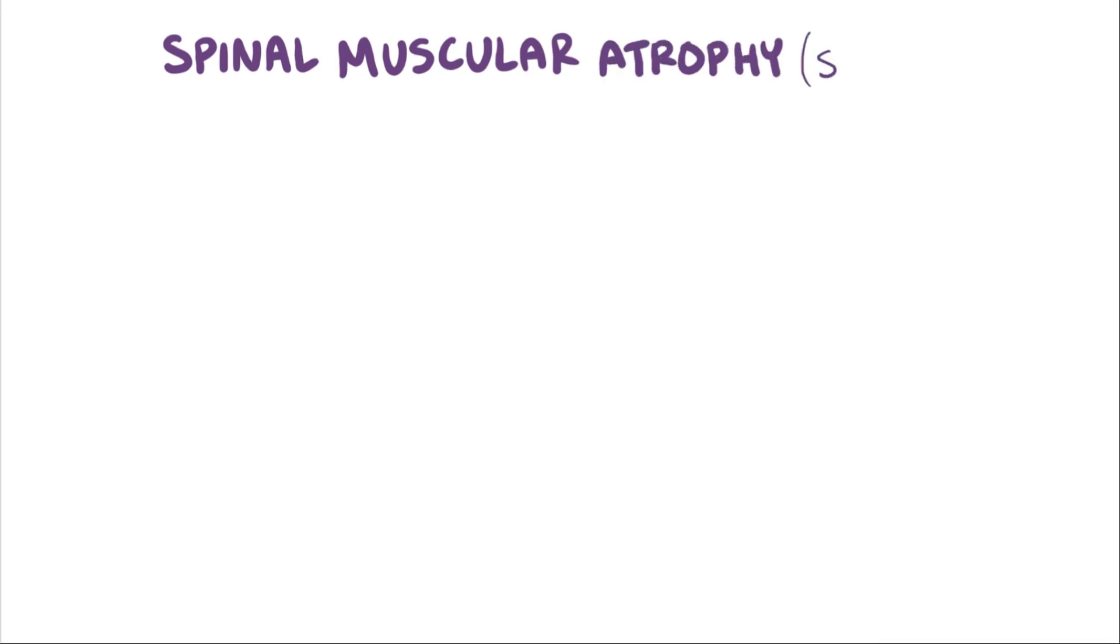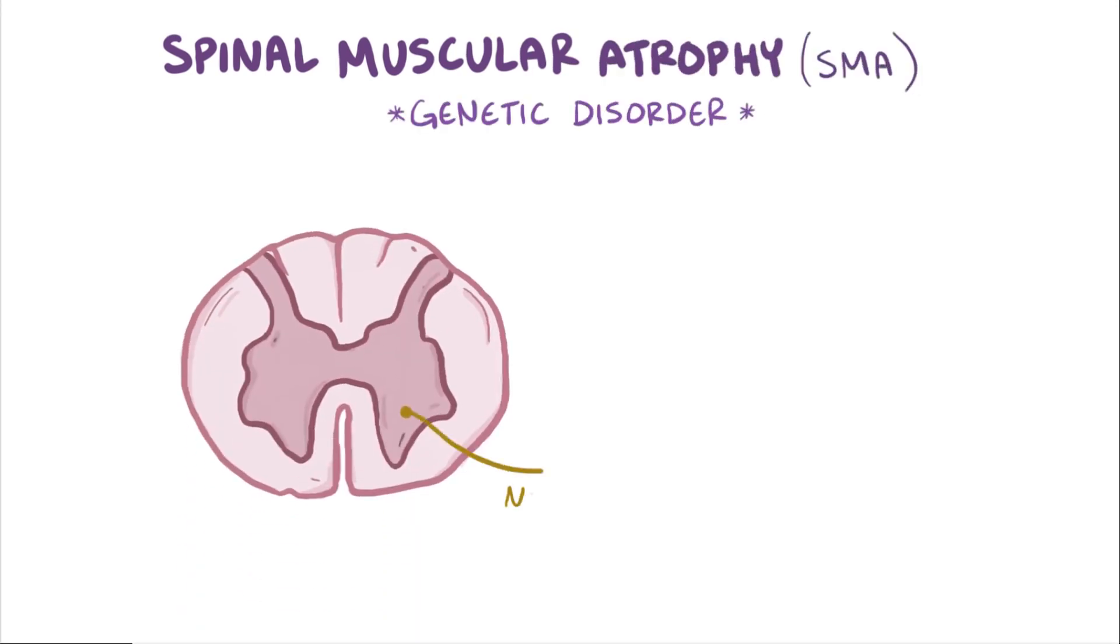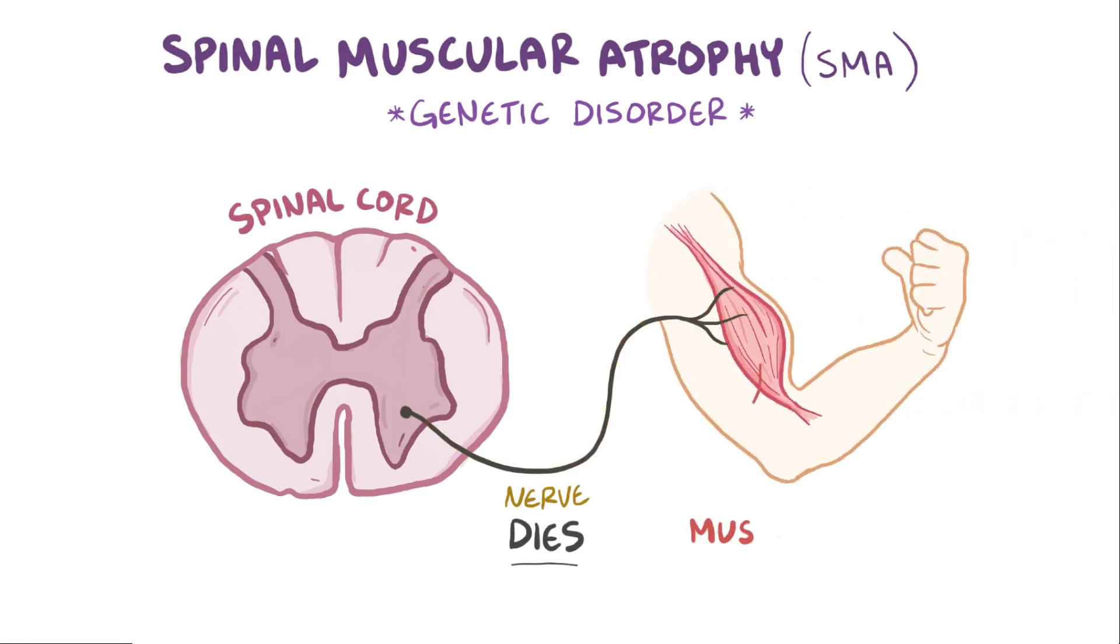Spinal muscular atrophy, or SMA, is a genetic disorder where nerve cells in the spinal cord die prematurely, and this causes the muscles that would normally be controlled by those nerves to atrophy or wither away, which causes weakness.